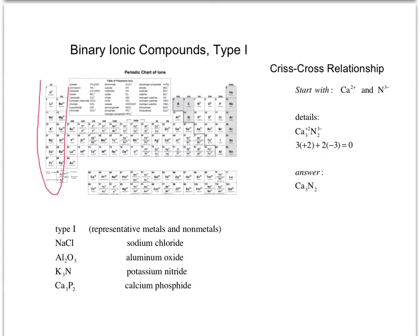Looking at the representative metals: what's unique about them is that they only have one charge. Type 1 is associated with metals that have only one charge, corresponding to Groups 1A and 2A. These form binary ionic compounds — binary means just two elements — between one of these representative metals and a nonmetal.